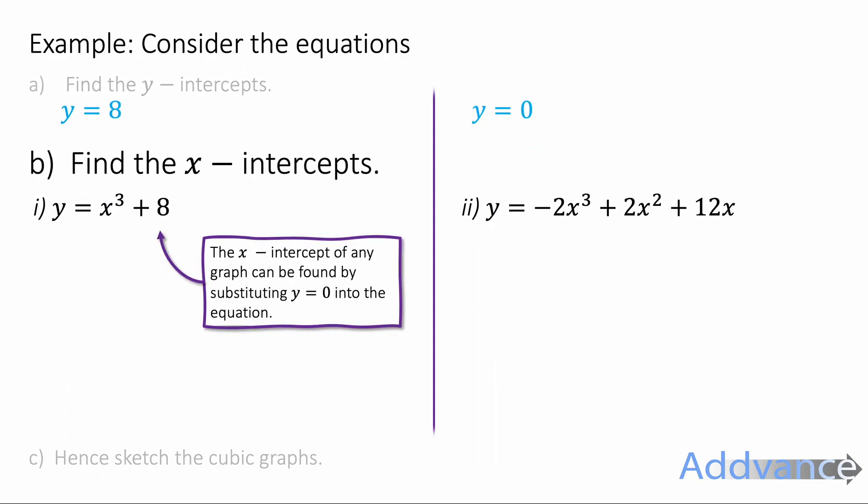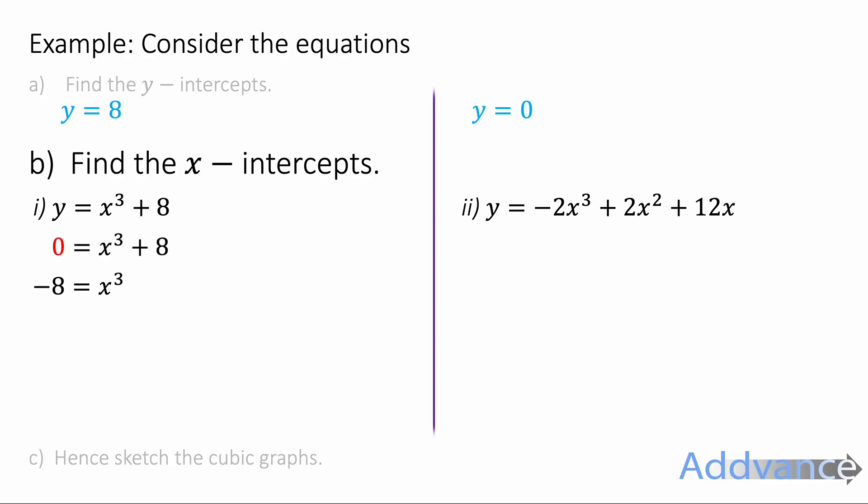Now we're going to find the x-intercepts. And to do that, we're going to solve when y is equal to 0 in the expression. So we're going to substitute y = 0 into these equations. We get 0 = x³ + 8. Take 8 off both sides. -8 = x³. And we're going to cube root both sides. The cube root of -8 is equal to x. And the cube root of -8 is -2. So the x-intercept of this one is -2.